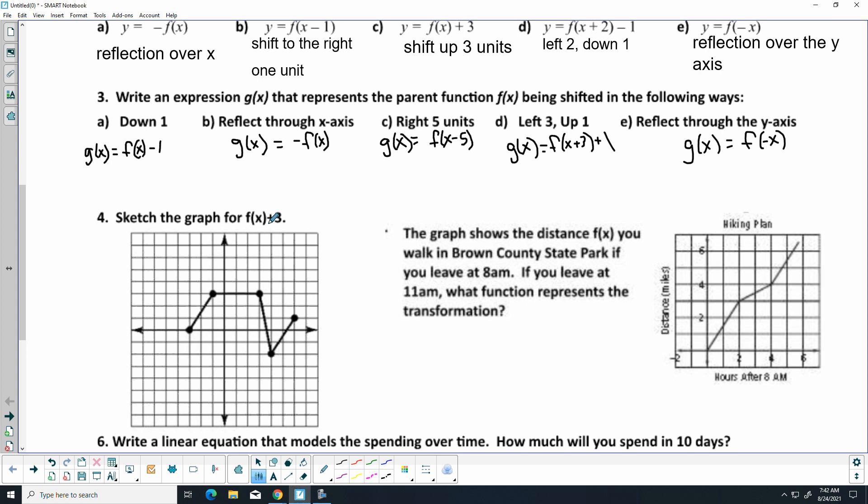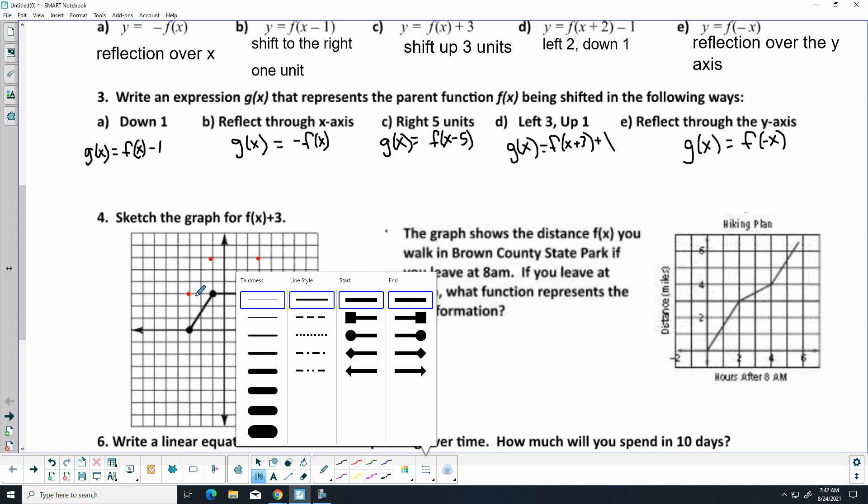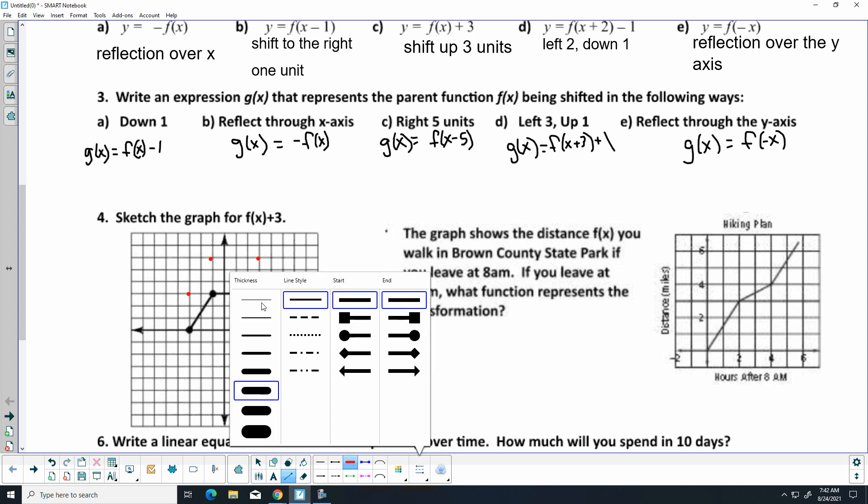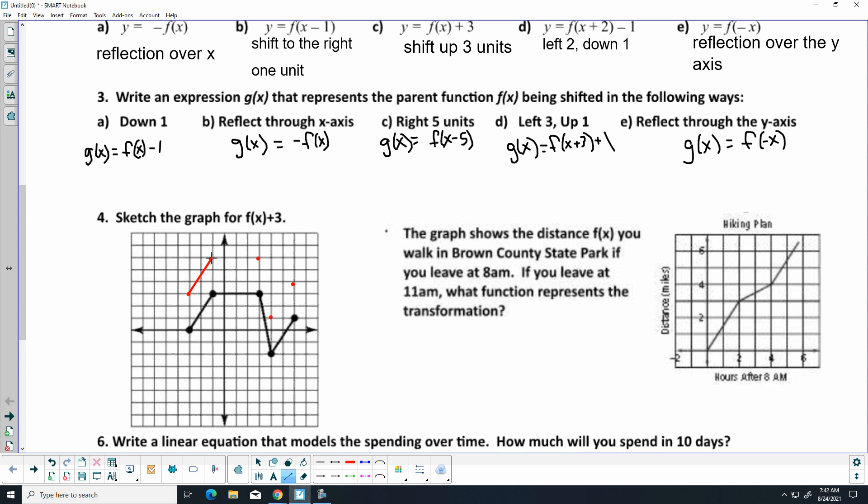All right, here, we want to sketch F of X plus 3. Well, what that really means is I'm going to be taking each of those points and moving it up 3 units, and then I just want to go ahead and draw my lines in between. And there I go.